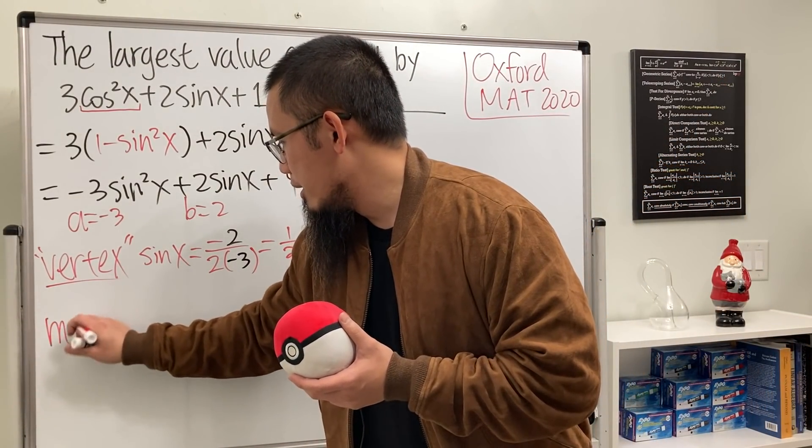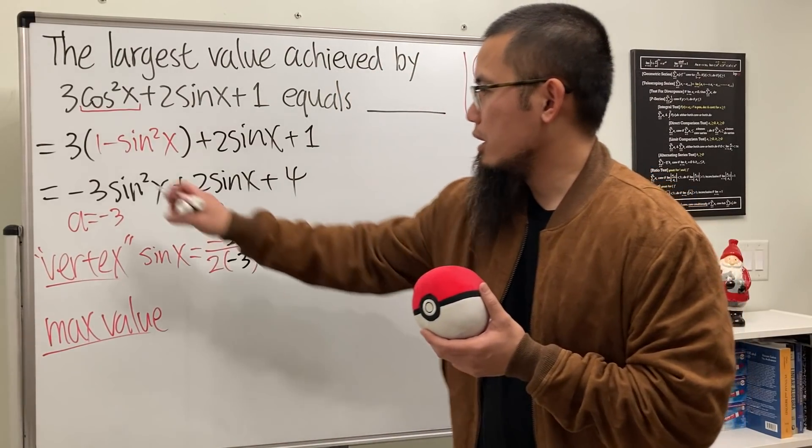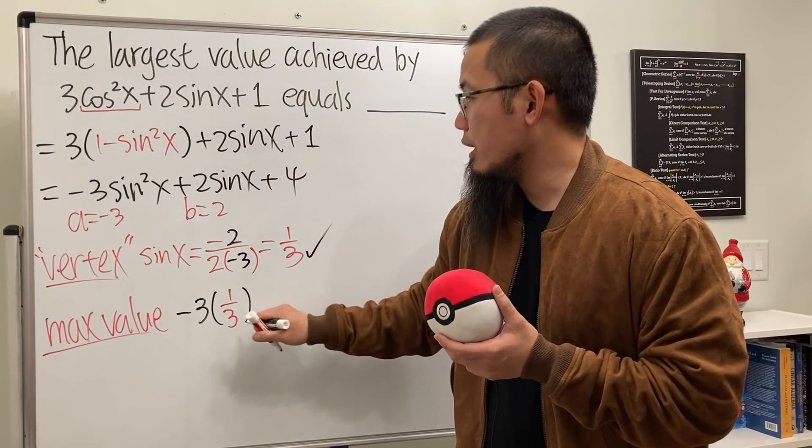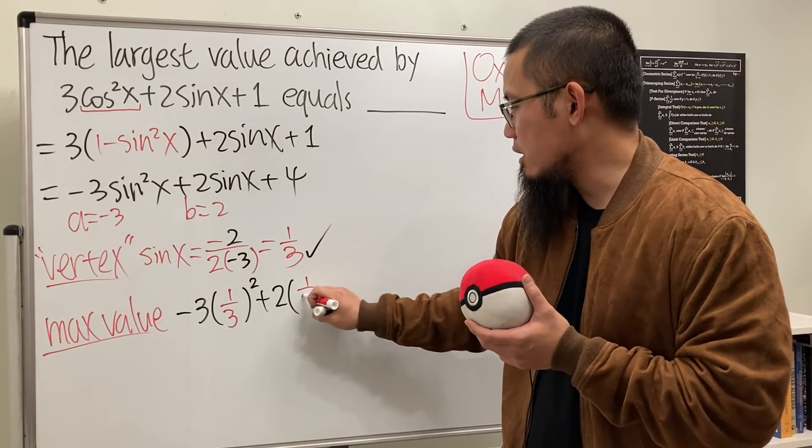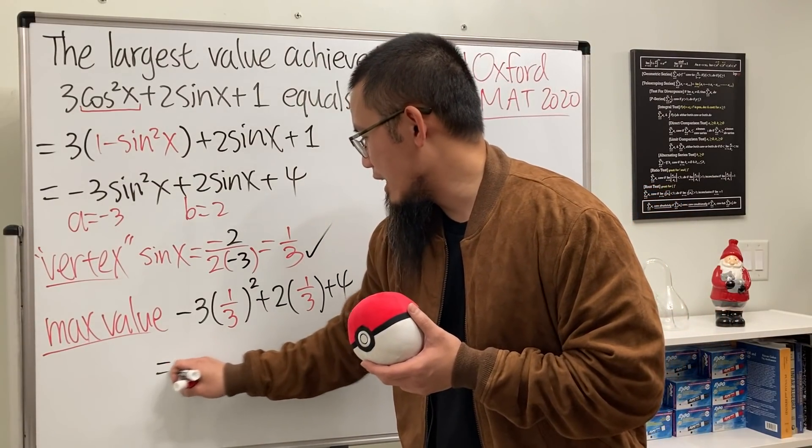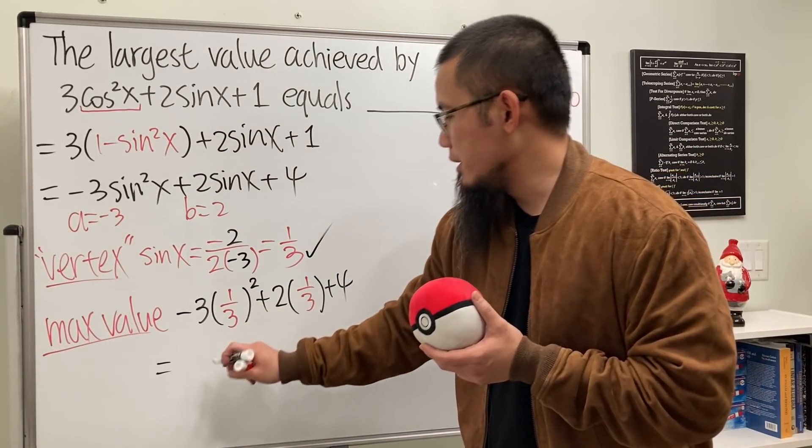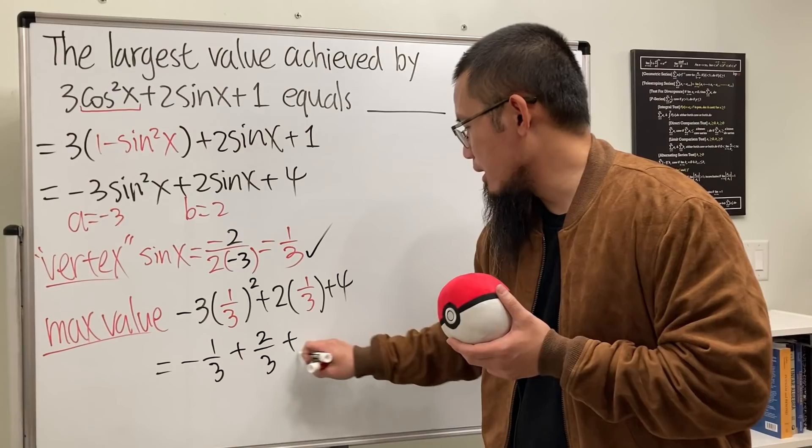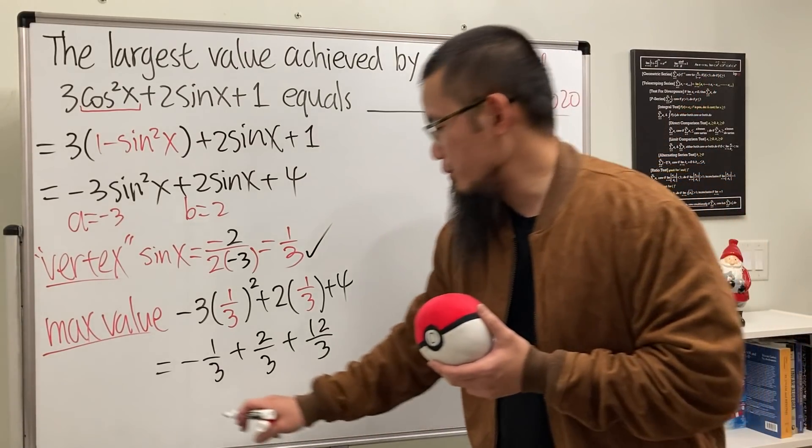And then what we'll do is just plug in one third to here and here and then find out the maximum value. Here we go. The maximum value is going to be, here we have the negative three times one third for the sine value and then we want to square that, and then we add two times sine x which is one third, and then we add the fourth. Just worked out. So here we have, cancel, it's going to be negative one over three plus two over three plus twelve over three. So all together we have 13 over three. Done.